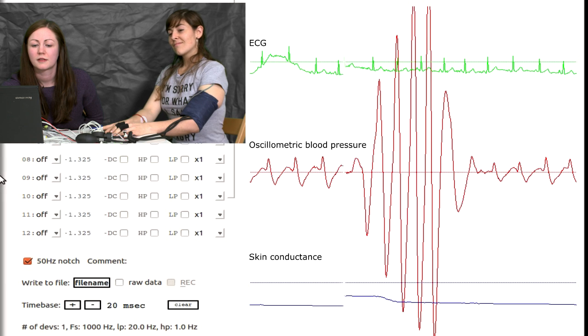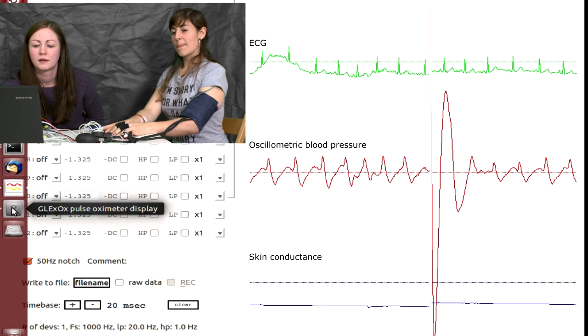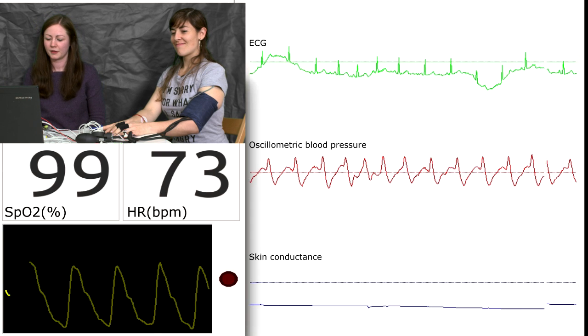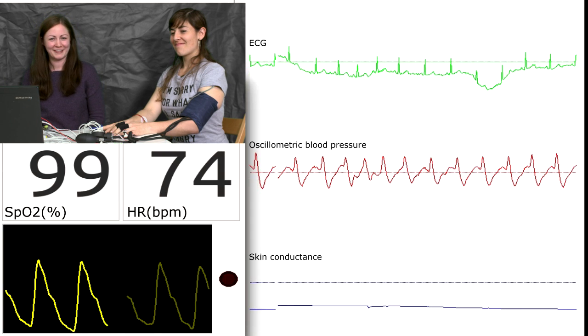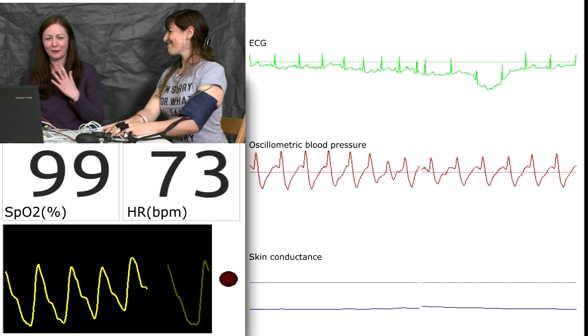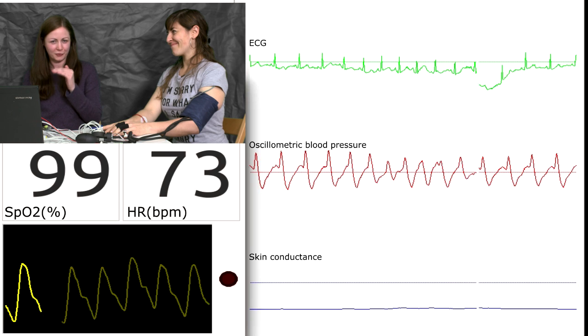I'm just going to put the pulse oximeter back on the screen as well, so you can see all of the parameters together. So Ali is now going to tell me a story which is going to have lies in it and truths in it. And so the first three lies and truths are going to appear on the screen.